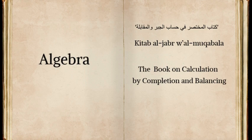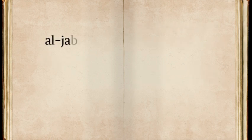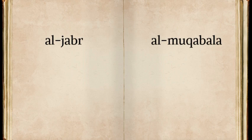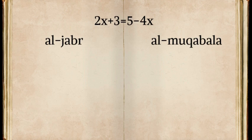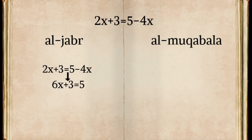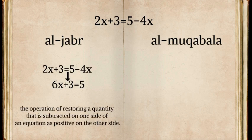The word algebra is a transliteration of the Arabic al-Jabbar used in Al-Khawarizmi's title. Al-Khawarizmi's approach to algebra consisted of two operations, al-Jabbar and al-Muqabala. To explain the meaning of the terms, let's look at the equation 2x plus 3 equals 5 minus 4x. The operation of algebra transforms 2x plus 3 equals 5 minus 4x to 6x plus 3 equals 5. Algebra is the operation of restoring a quantity that is subtracted on one side of an equation as positive on the other side.